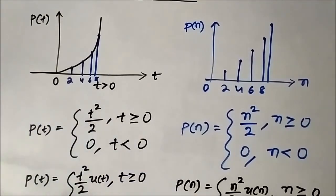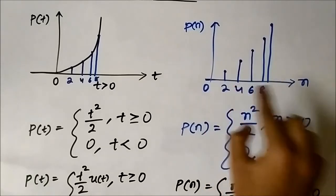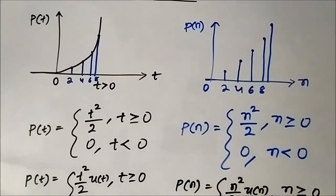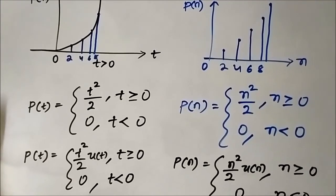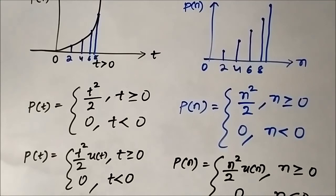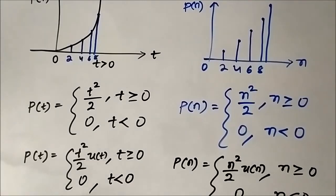This covers the continuous time analysis of the unit parabolic signal and the discrete time analysis of the unit parabolic sequence, with their respective functional representations in both domains. This is the third elementary signal analyzed. The important thing to remember is the relationship between the step function, ramp function, and parabolic function through integration and differentiation. We have around 5 to 6 more elementary signals to cover. I hope you liked this video — please subscribe to Engineering Tutorial for more videos on electrical, electronics, instrumentation, and communication engineering. Have a great day, thank you very much.